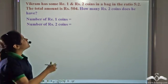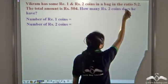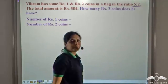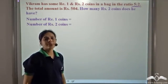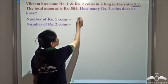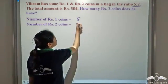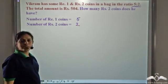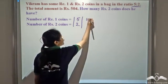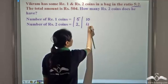It is given that the number of Rupee 1 and Rupee 2 coins is in the ratio 5 is to 2. What does it mean? It means if there are 5 Rupee 1 coins then there are 2 Rupee 2 coins. If there are 10 Rupee 1 coins then there are 4 Rupee 2 coins.